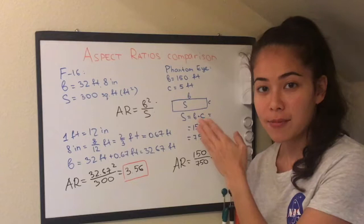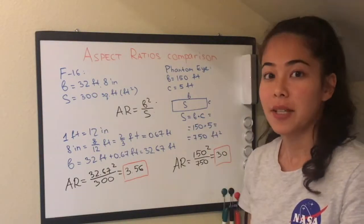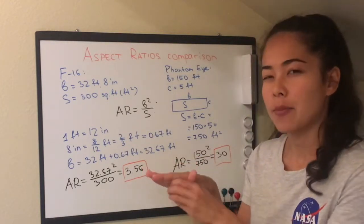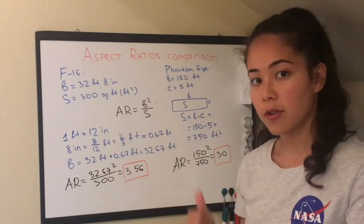And is Phantom Eye highly maneuverable? It doesn't have to be, because it just needs to fly in one orientation having the camera pointing downwards. So let's write down the conclusion for this problem.